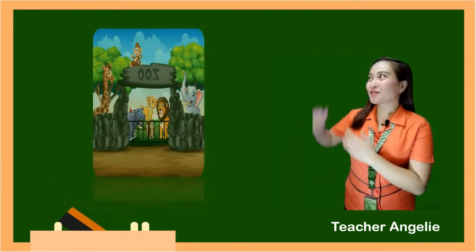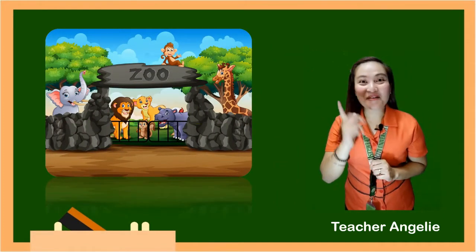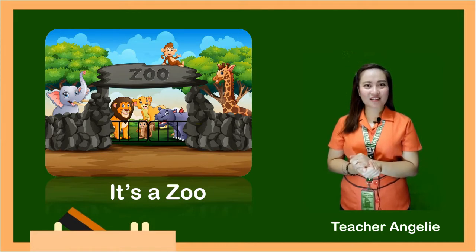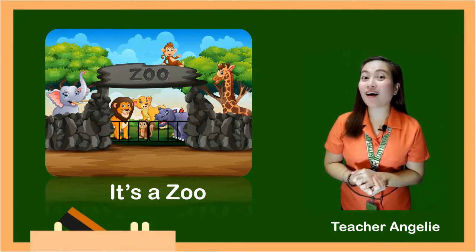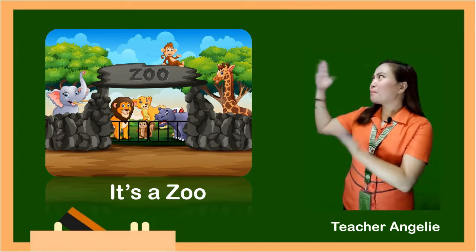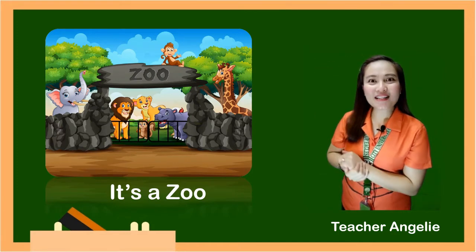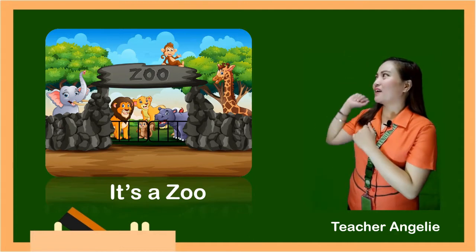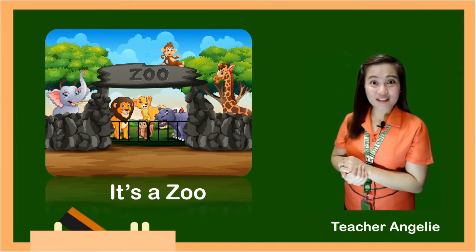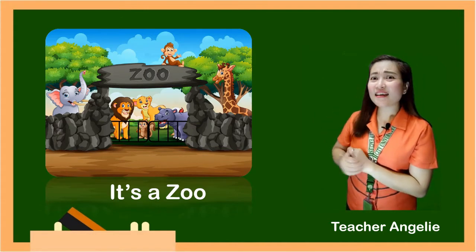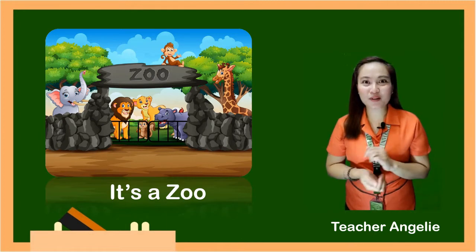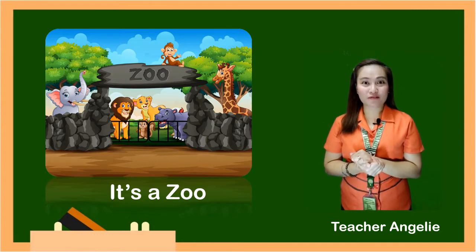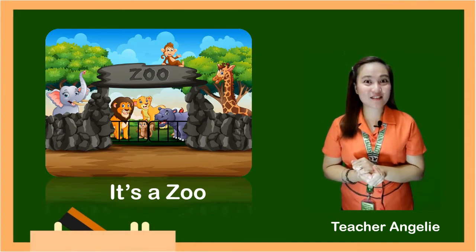Children, can you guess what's in the picture? Very good! It's a zoo! Have you been to a zoo? Wow, it's nice to hear that! What did you see in the zoo? Animals! How about this picture? What animals did you see inside this zoo? Yes! There is a monkey, elephant, a lion, tiger, squirrel, hippopotamus, and giraffe. Do you want to see and learn more animals? Okay! Let's watch a short video and I want everybody to watch and listen carefully.